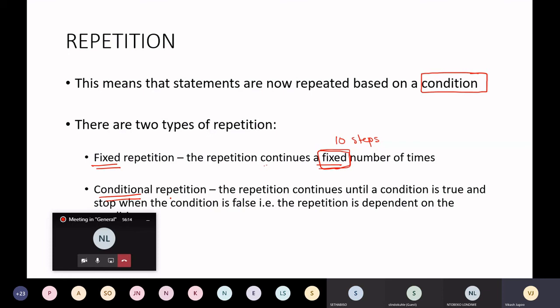Of the batter, of the cake that you're making, the consistency of that will tell me now it is time to stop. But with fixed repetition I know I needed to take 10 steps to get to a certain point. That's fixed and the other one is conditional.